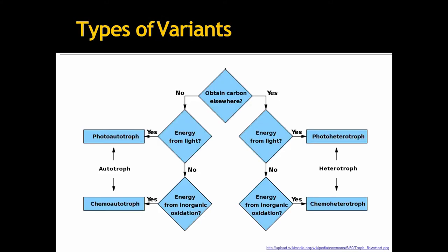There are generally two types of variants. One is autotroph, another one is heterotroph. The autotrophs are divided into photoautotroph and chemoautotroph. Whereas heterotrophs are also divided into photoheterotroph and chemo-heterotroph.